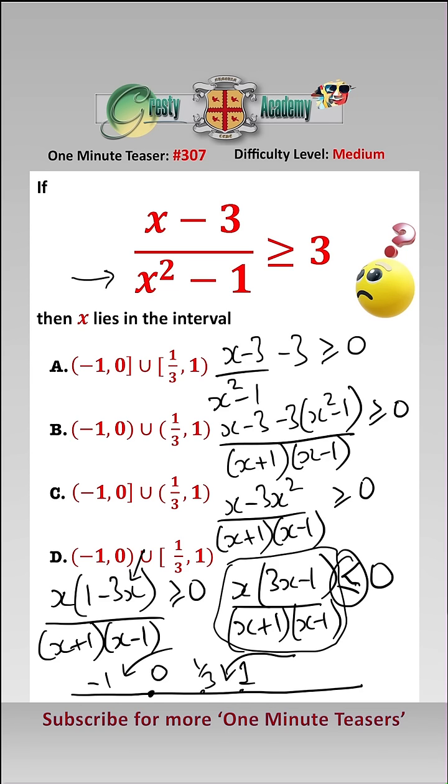Note, because it's less than or equal to 0, x can be 0 and x can be a third, indicated by the square brackets here and here. So the answer is A.